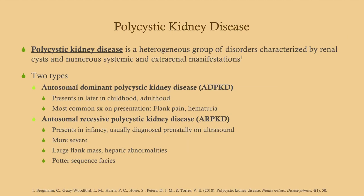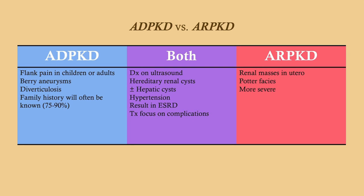PKD is a group of disorders, but there are really only two that are relevant: ADPKD — autosomal dominant polycystic kidney disease — and ARPKD — autosomal recessive polycystic kidney disease. Let's go into what these have in common first. They're both diagnosed on ultrasound. You may use other imaging modalities, but you should always start with ultrasound. They both involve hereditary renal cysts that develop over time.